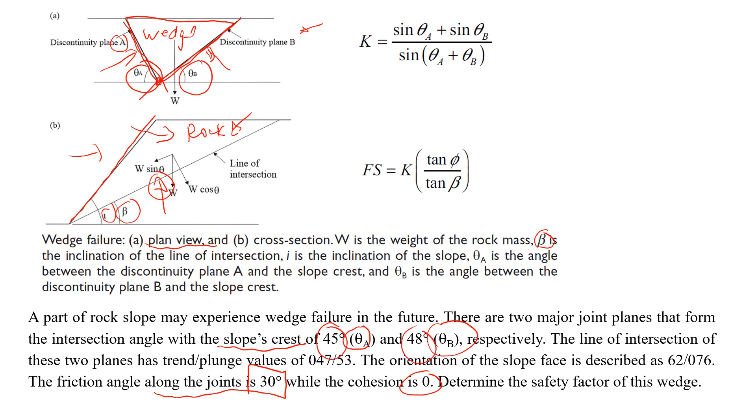And these are the numbers 45 and 48 degrees. And we know that the line of intersection of these two planes has a trend and plunge. So what we're going to see is what is the angle, so we actually need to get beta from here. So we don't... here we're given 0.47 and 53, we need to decide which one will be the inclination.